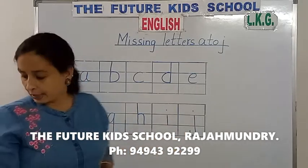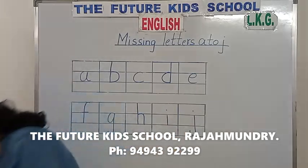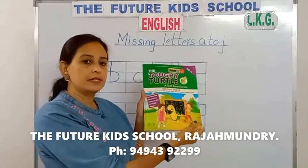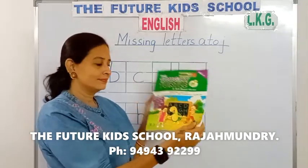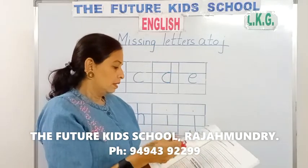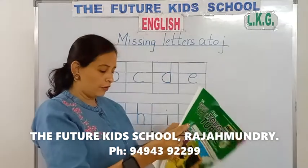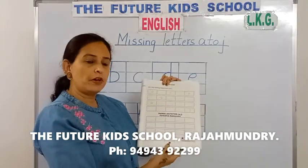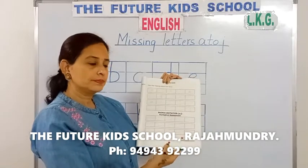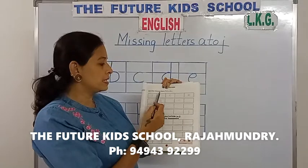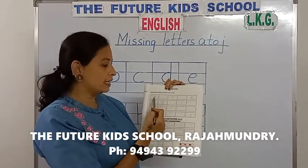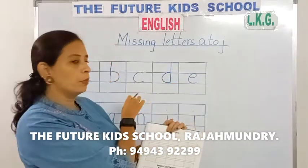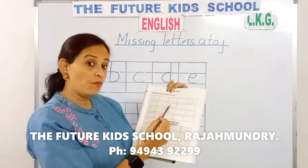So we fill in with the missing letters children from A to G. Good. Do this at home children. Take out your writing skills book. Writing skills. Page number 41 children. Page number 41. Yes. Fill in the missing letters from A to J. This is what we've done on the board.